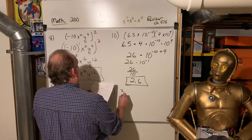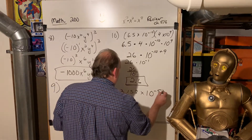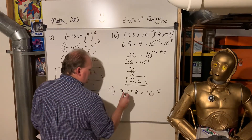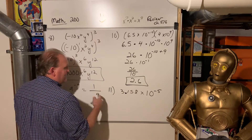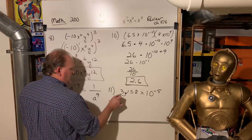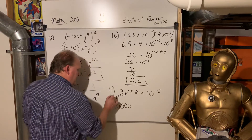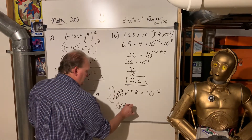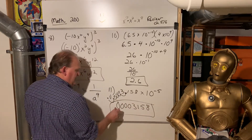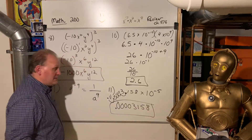Number 11: convert 3.158 times 10 to the negative 5th to standard decimal form. That negative power means we move the decimal five places, adding 4 zeros before the 3: 0.00003158. A very common error is that students are so focused on moving the decimal that they forget about the rest of the digits — don't forget the 1, 5, 8.